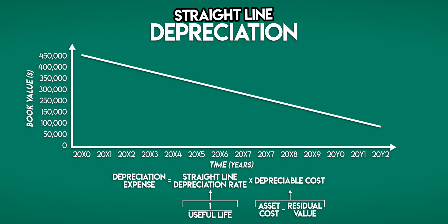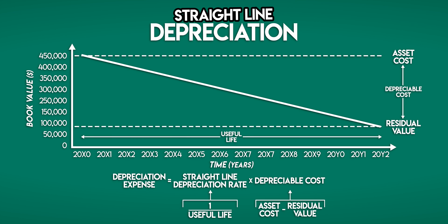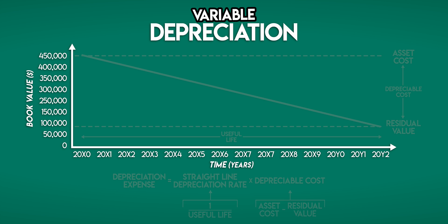Let's take another look at that graph. Here we're tracking your combine harvester's book value over time. Your asset cost at the beginning is $450,000 and its residual value at the end is $90,000. Its depreciable cost is the difference between the two: $360,000, and it has a useful life of 12 years. Straight line depreciation is a fixed cost method, so the expense is spread out evenly, but there are also variable depreciation methods where the expense is higher in early years, which can be a bit more tricky.